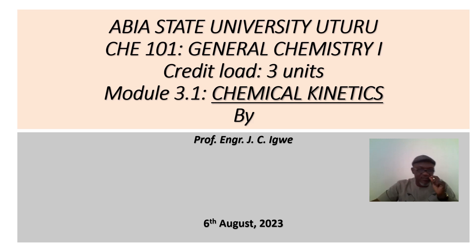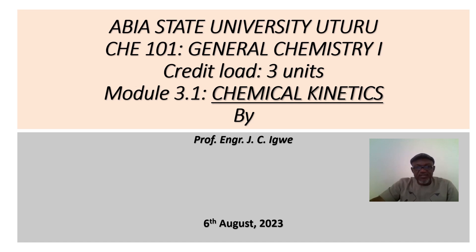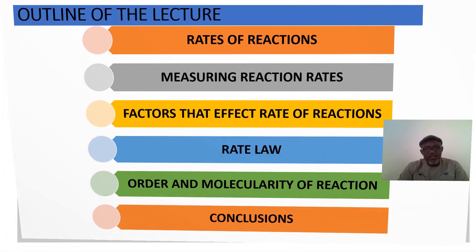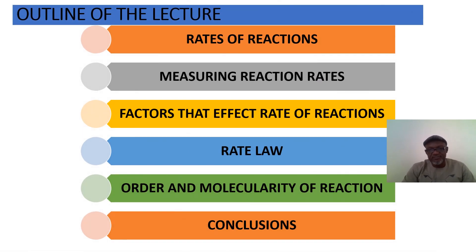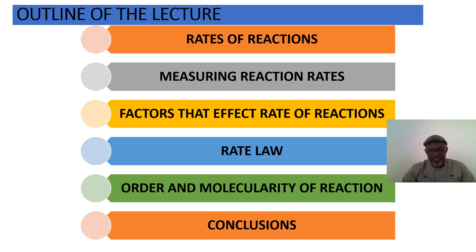Let's continue with our lectures. We're now on Module 3, which has been divided into 3.1, 3.2, and 3.3. Module 3 is on chemical kinetics, and we'll outline rates of reactions, measuring reaction rates, factors that affect rate of reactions, rate law, order, and molecularity of reactions.